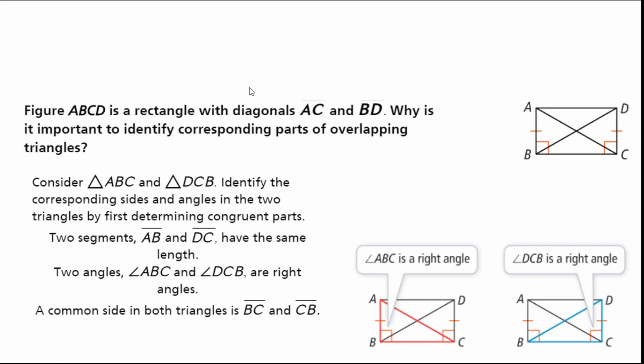Moving on: figure ABCD is a rectangle. Notice we're moving beyond just single triangles — if you look at the figure, I can see four triangles, actually more than four. We'll get more into that as we go throughout the year. The key question is: why is it important to identify corresponding parts of overlapping triangles? From 4.1 through 4.5, we focused on what congruency is, showing it's a way to prove rigid motions would map our pre-image onto our image, and then we moved into specific criteria.